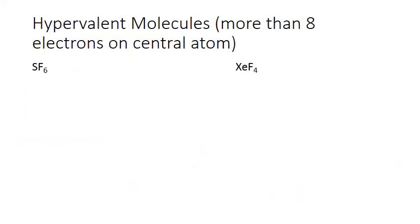Our last exception to the octet rule are hypervalent molecules — molecules that contain an atom accepting more than eight valence electrons. This is possible when an element is from the third row of the periodic table or higher, because these elements have access to D sublevels and can accept extra electrons into those D orbitals. Two examples are sulfur hexafluoride and xenon tetrafluoride, the latter being one of the few experimentally created compounds formed with a noble gas.